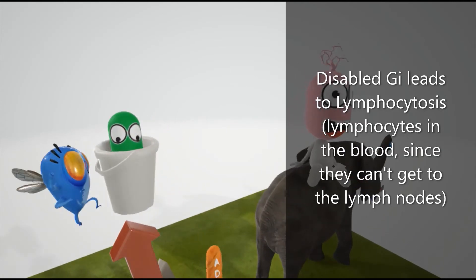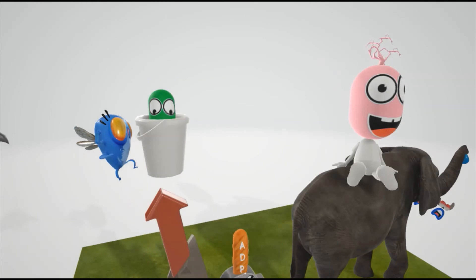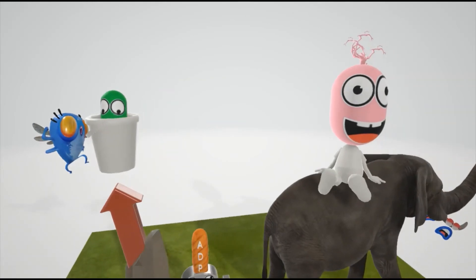...the lymphocytosis. That's because GI blocks chemokine signaling of lymphocytes to the lymph node. So if GI is out, then the lymphocytes won't know how to get to the lymph node, and they'll be in the blood. This lymph node actually has a friend who came to join in this insect.